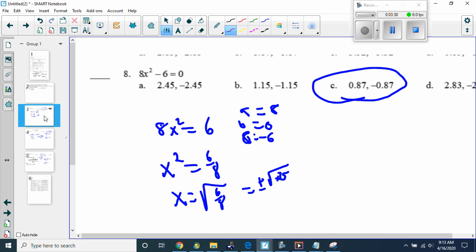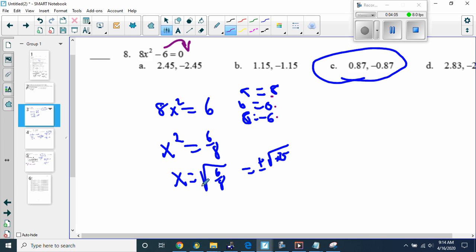This is number 8, which you could use a quadratic formula for and say A is 8, B is 0, and C is negative 6. You could use the quadratic formula. You're going to get the same answer. What I did was I used solving by square roots, and we bring the 6 over by addition. So, if 6 comes over, it's positive 6, divide by 8, and then you take the square root of both sides, and you get plus or minus, and this says 0.75. And that gets you answer C.